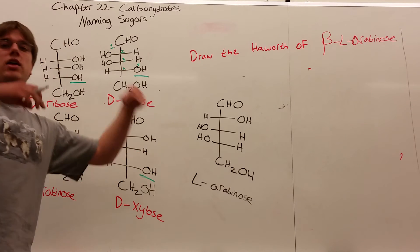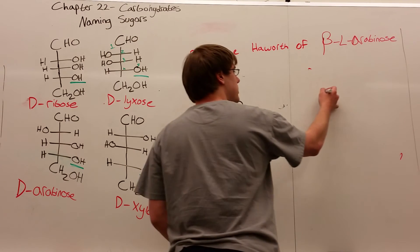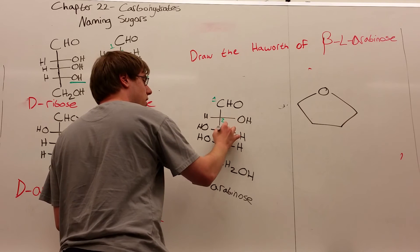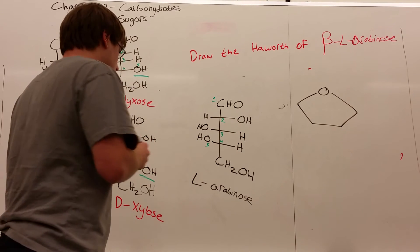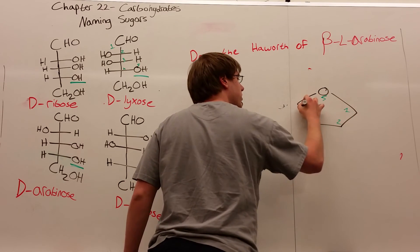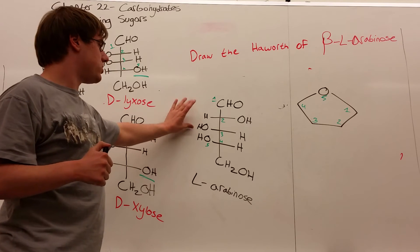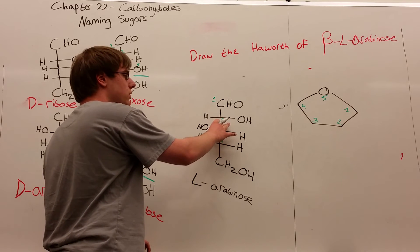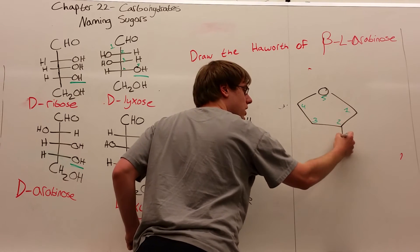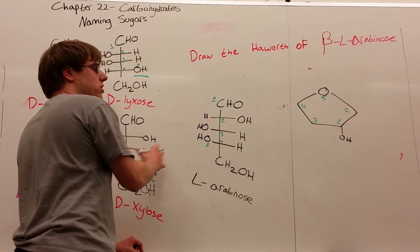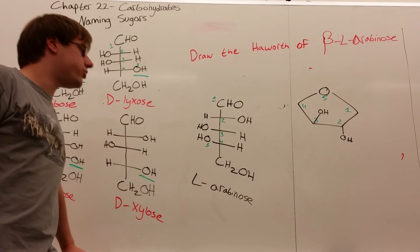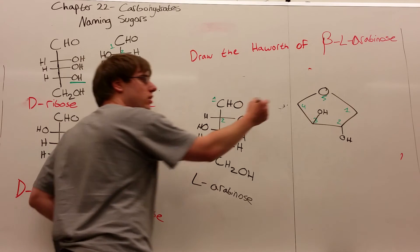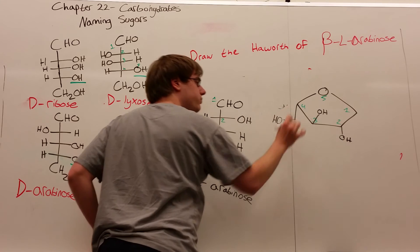Now I can translate that into the Haworth projection. It's a pentose, so a five-membered ring. Number the carbons: five, one, two, three, four. Let's start with carbons two and three—they're neither anomeric nor penultimate, so they follow the basic rules. Carbon 2 has an OH on the right, so it points down. Carbon 3 has an OH on the left, so it points up. Carbon 4 is our penultimate carbon, so we draw the CH2OH group. Since this OH is on the left, the CH2OH points down.